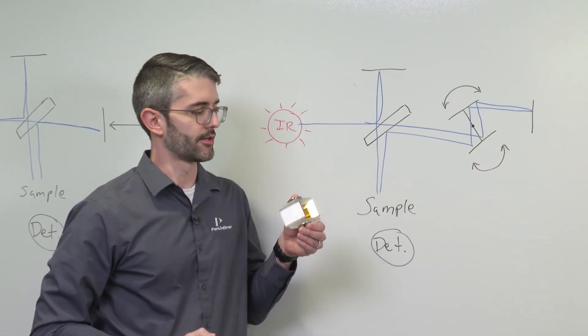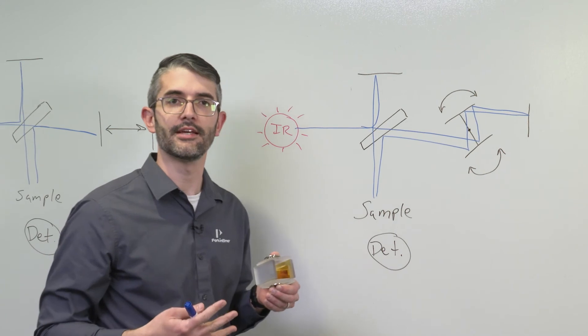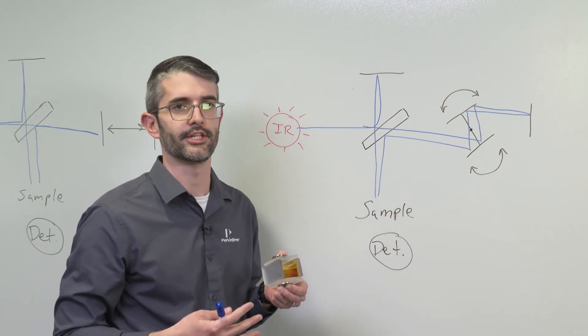The use of this pivoting mirror pair prevents misalignment. In fact, the Dynascan interferometer is immune to the effects of tilt and shear.